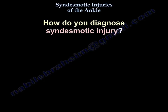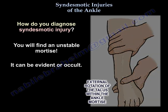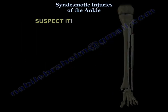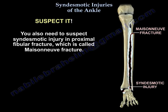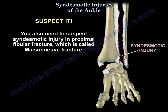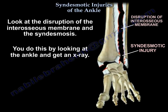How do you diagnose syndesmotic injury? You will find an unstable mortise. It can be evident or occult. You need to suspect syndesmotic injuries in proximal fibular fracture, which is called Maisonneuve fracture. Look at the disruption of the interosseous membrane and the syndesmosis by looking at the ankle — get an x-ray.